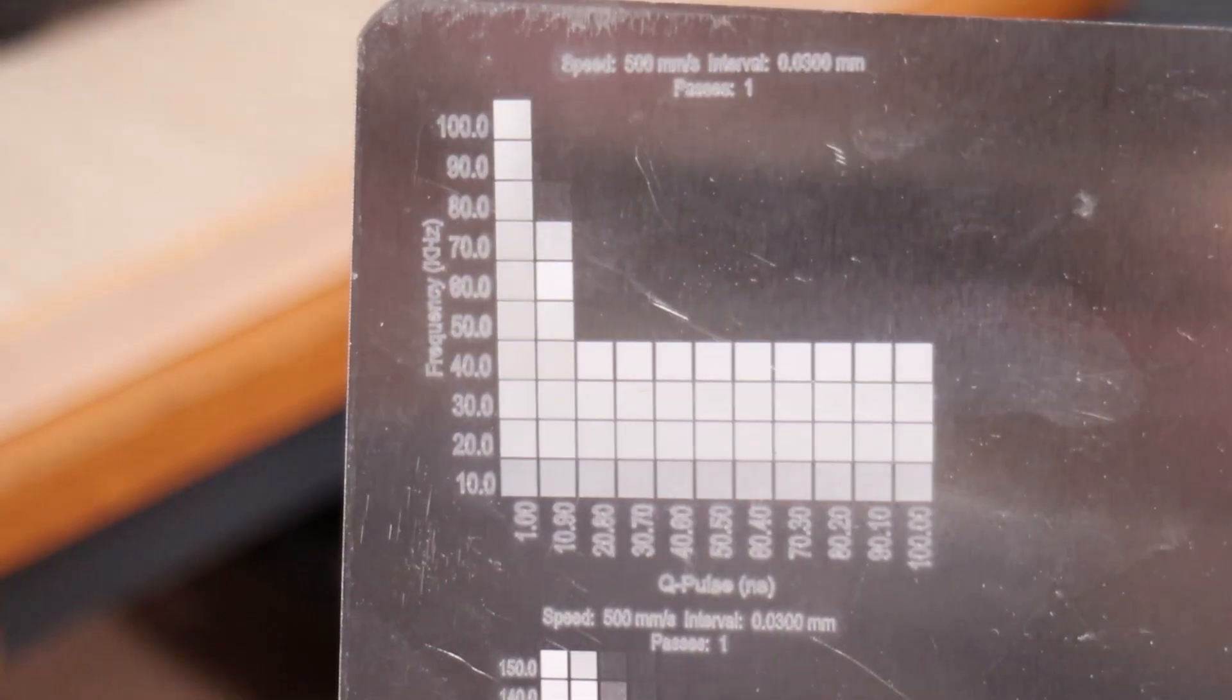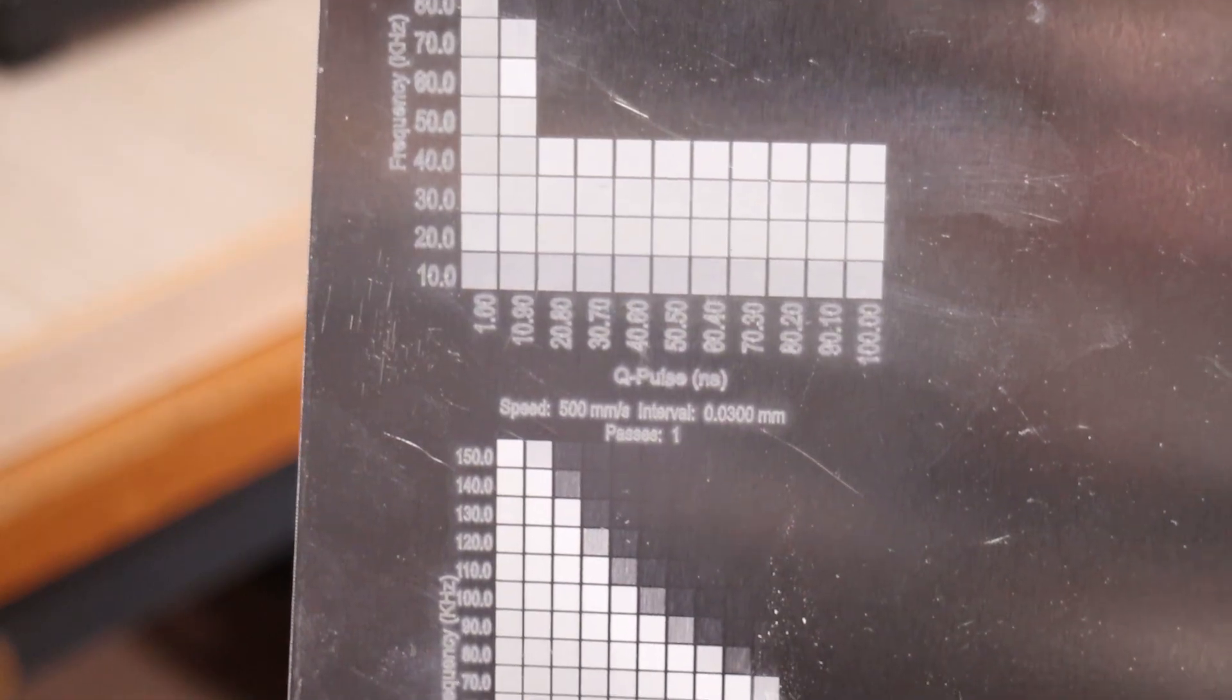This effect was clearly visible when I engraved a test pattern on raw aluminum. At higher frequencies, there was little to no effect at larger Q-pulse settings. Overall, the engravings looked great.